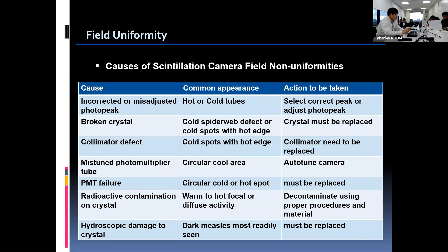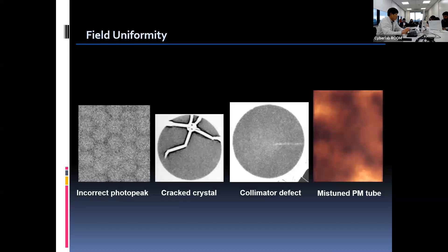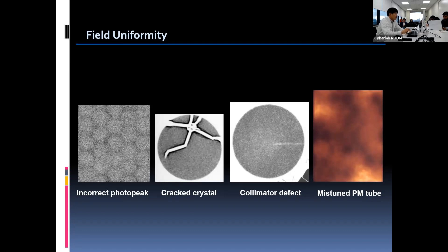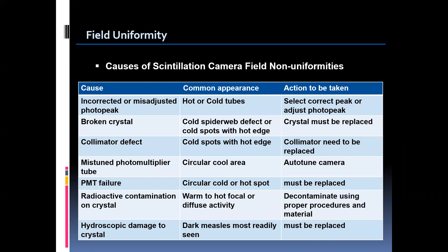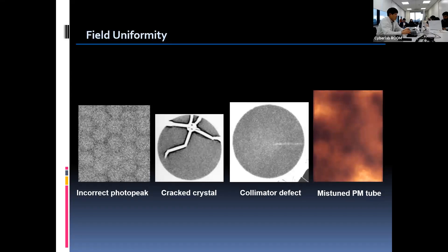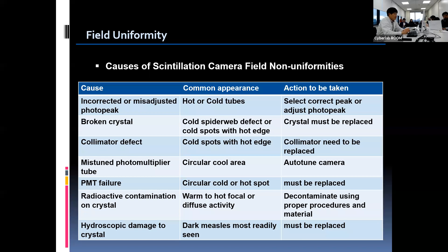This table shows examples of non-uniformity. Incorrect or mis-adjusted photopeak causes hot or cold tubes, as described in the image on the left — the PM tube shape is visualized. In this case, selecting the correct peak can take care of this problem. A broken crystal shows a cold spiderweb defect or cold spots with hot spots, as shown in the second image. In this case, the crystal must be replaced.